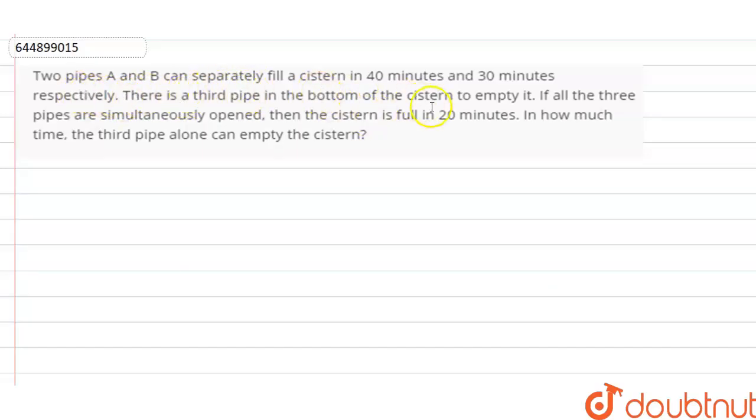Two pipes A and B can separately fill a cistern in 40 minutes and 30 minutes respectively. There is a third pipe in the bottom of the cistern to empty it. If all three pipes are simultaneously opened, then the cistern is full in 20 minutes. In how much time the third pipe alone can empty the system?